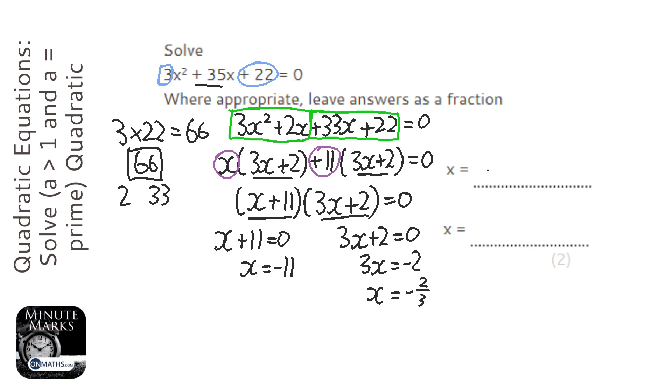So we've got x equals minus 11, and x equals minus 2 thirds. And those are our answers. Now what we can do is we can put that into the expression here, and either of those would get the answer equaling zero.